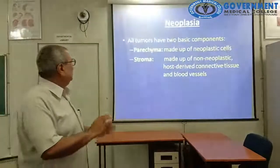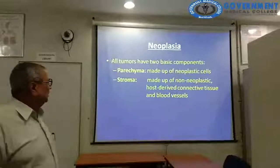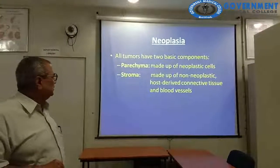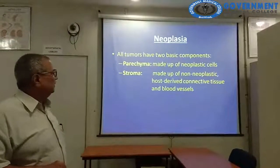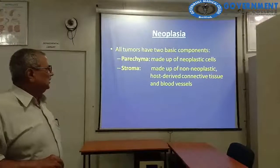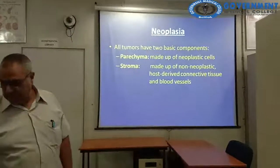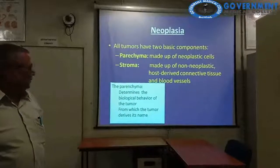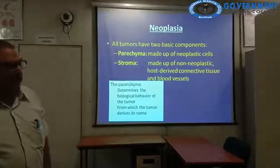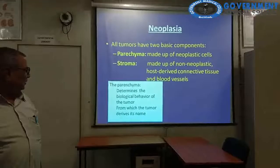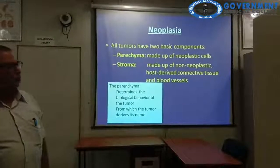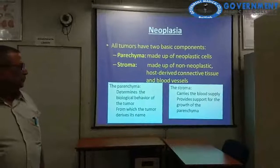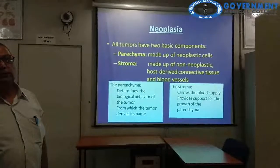All tumours have two basic components: parenchyma and stroma. The parenchyma is made up of neoplastic cells and determines the biological behavior of the tumour, from which the tumour derives its name. The stroma is made up of non-neoplastic host-derived connective tissue and blood vessels, carries the blood supply, and provides support for the growth of the parenchyma.